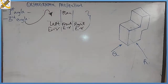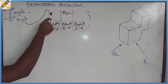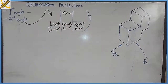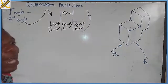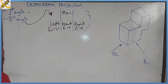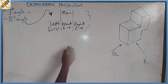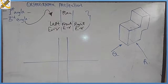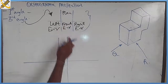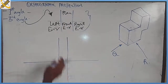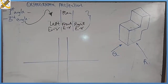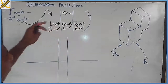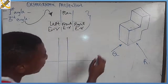Now this same question — if we are to solve it in third angle projection, this is the chart for third angle orthographic projection. If we deduce the same question in third angle using the same direction of arrow Q as our front view, our front view is going to be at the bottom, our plan is going to be at the top, our right end view is at the right, and the left end view is at the left.